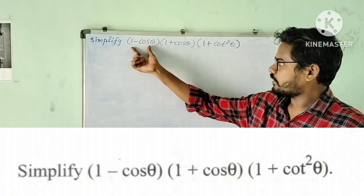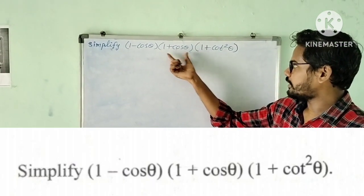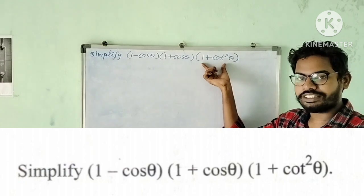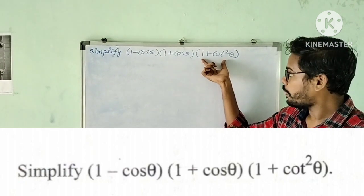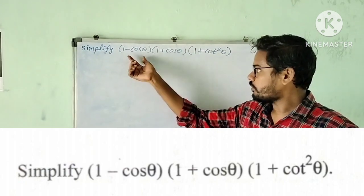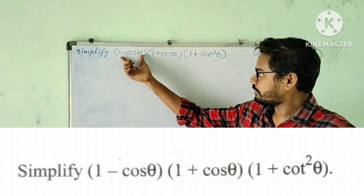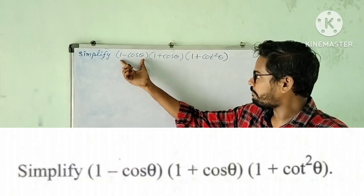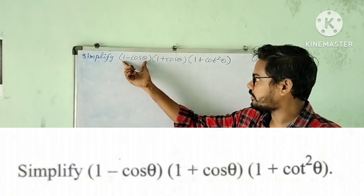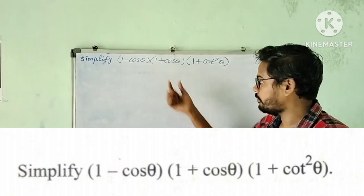Simplify 1 minus cos theta into 1 plus cos theta into 1 plus cos squared theta. So we have to simplify further. First of all, look at the first two expressions: 1 minus cos theta into 1 plus cos theta.